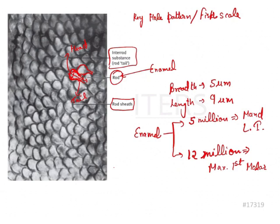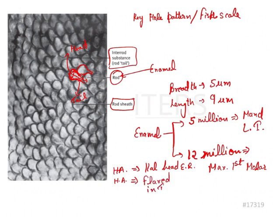Another important point about enamel rods: the hydroxyapatite crystals are arranged parallel in the head or body region of the enamel rod. These hydroxyapatite crystals change their orientation when they reach the tail region — they get flared in the tail region at an angulation of 65 degrees. These are important values to remember for exams.